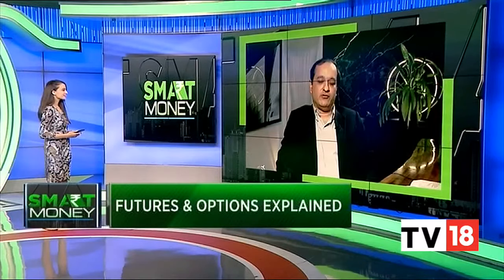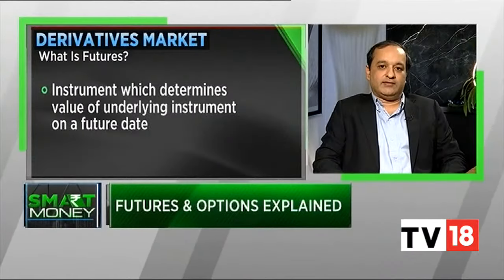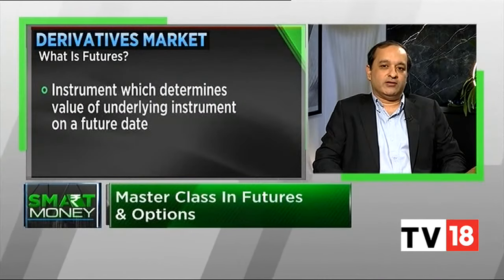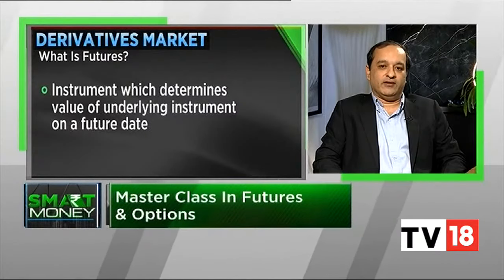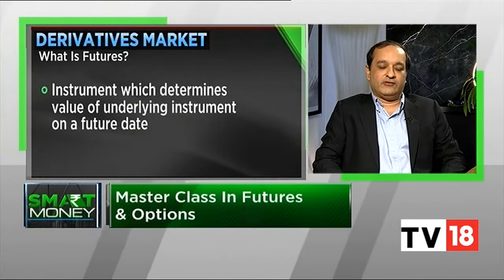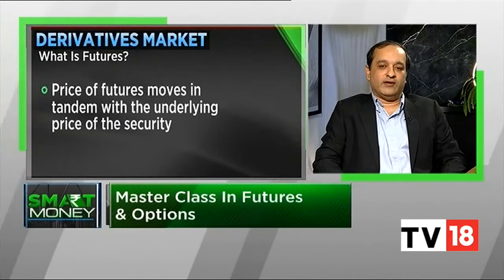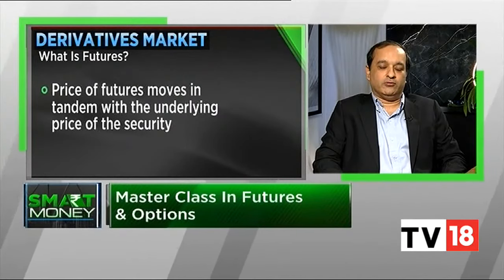In very simple layman's terms, futures is basically the price of an asset which the market is willing to give at a specified date in the future. For example, let's say Tata Motors stock is trading at 132 and the futures is trading at 132.5 for an expiry on the 29th of October. This basically means that as of today, the market is willing to give a price of 132.5 to the underlying asset, which is Tata Motors, on 29th of October 2020.